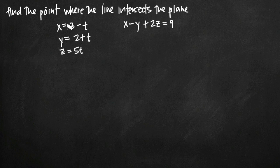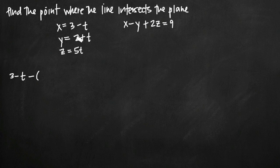Here's what that looks like. We have x equals 3 minus t, so we're going to plug 3 minus t into the equation of the plane for x. Then for y, we're going to plug in 2 plus t — we have a negative sign here, which we need to distribute, so we write minus, then in parentheses, 2 plus t. Then for z, we've got a coefficient of 2, so we leave that and plug in 5t for z. We set that equal to 9.